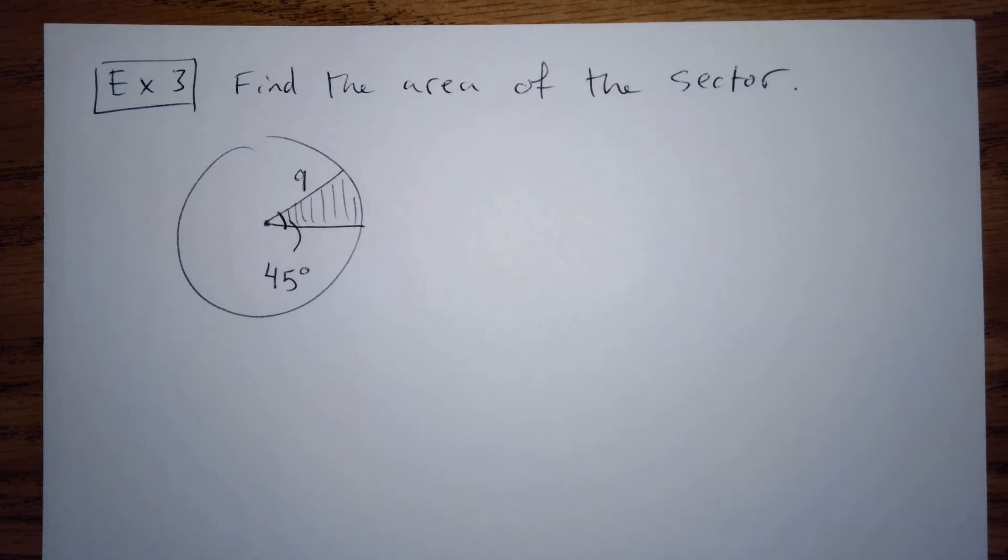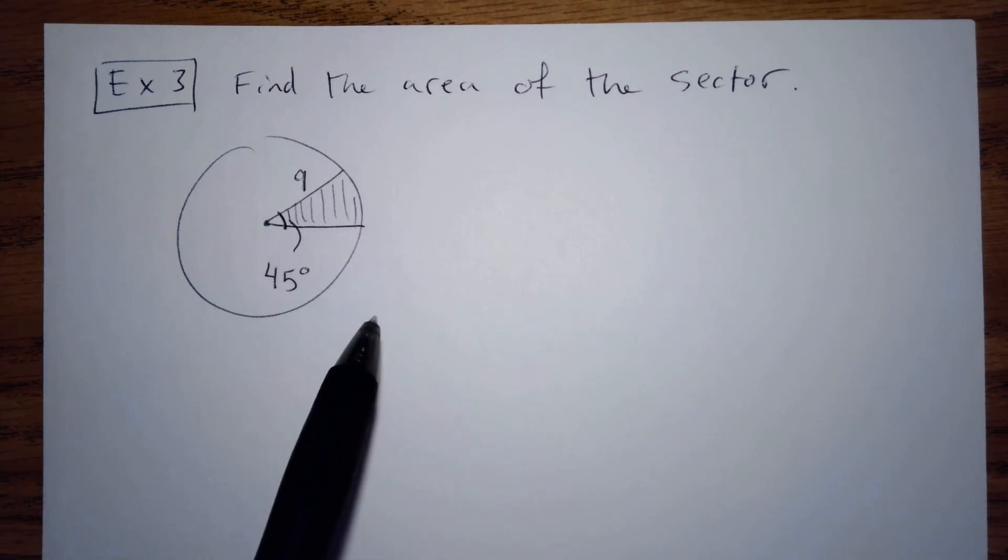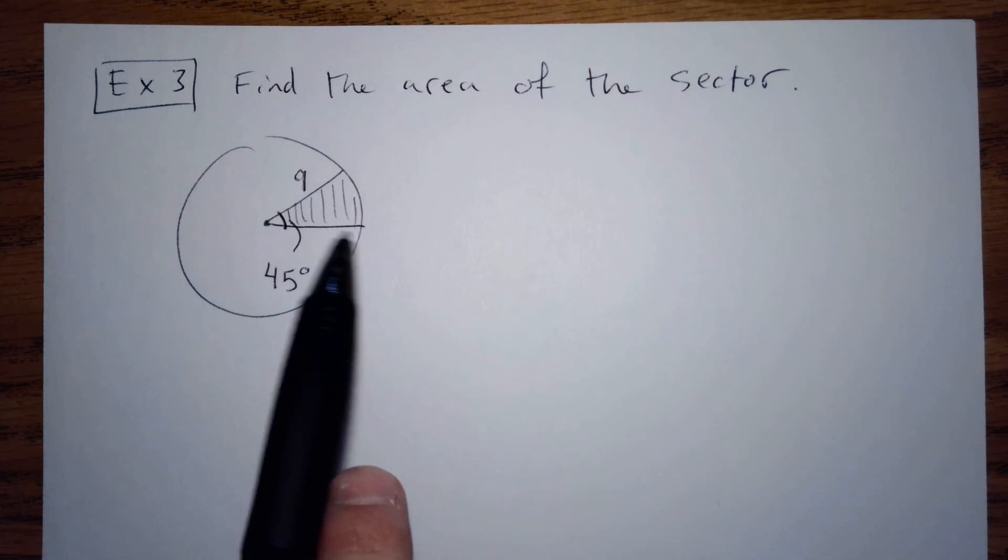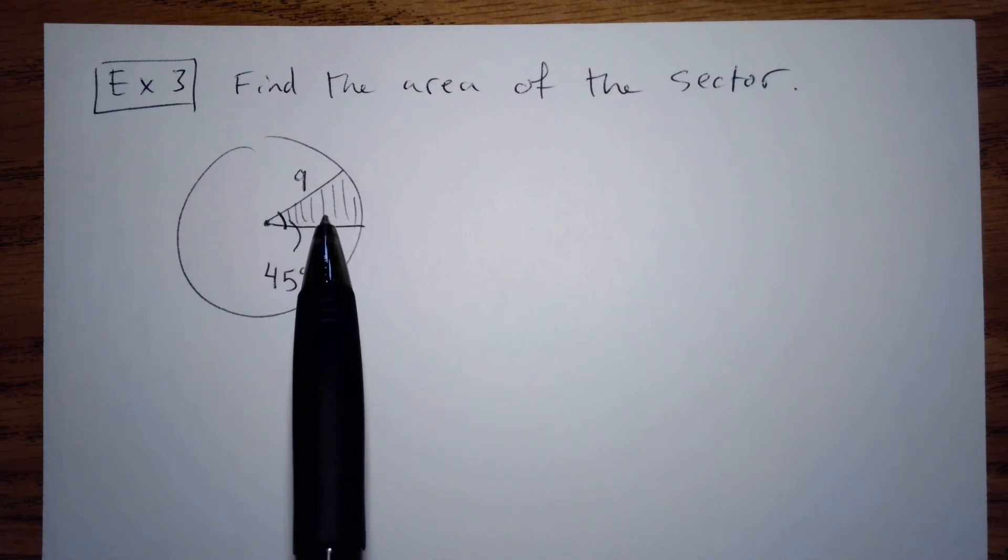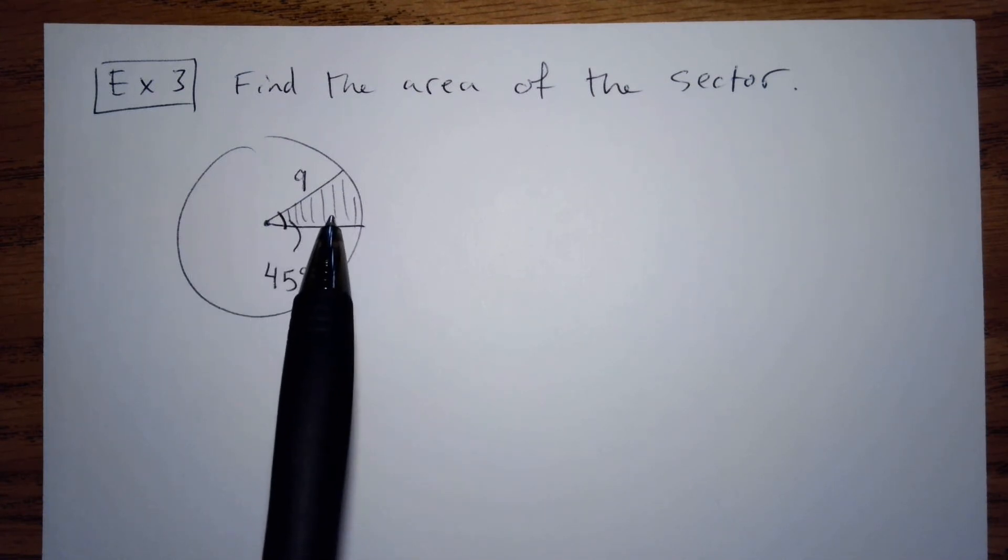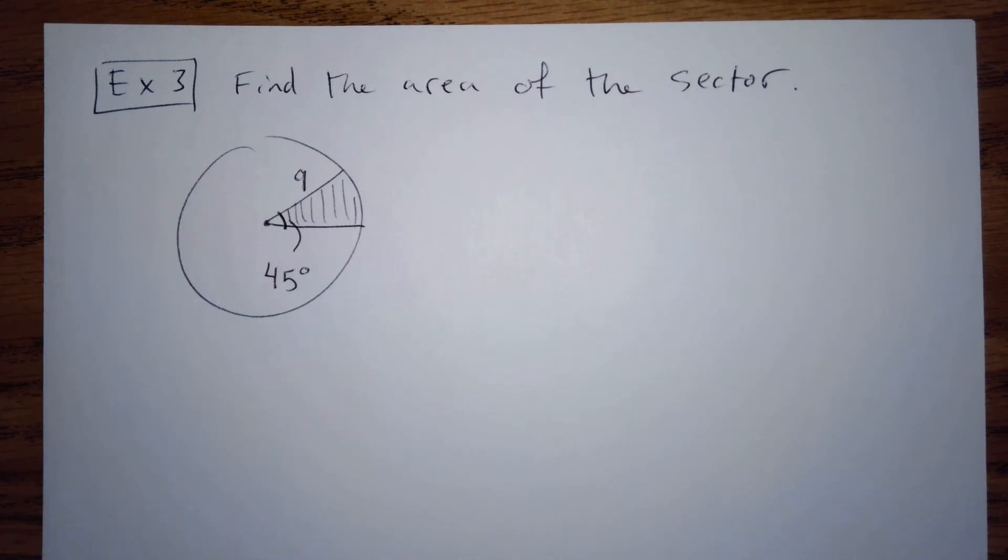First, the area of the sector. The area of this sector is going to be smaller than the area of the whole entire circle, right?